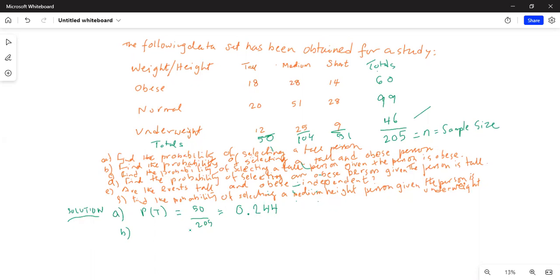Part B: find the probability of selecting a tall and obese. T and O, O stands for obese. So we are looking for the joint event of tall and obese. So we look at the intersection of the obese row with the tall column. So obese and tall where they intersect is 18.